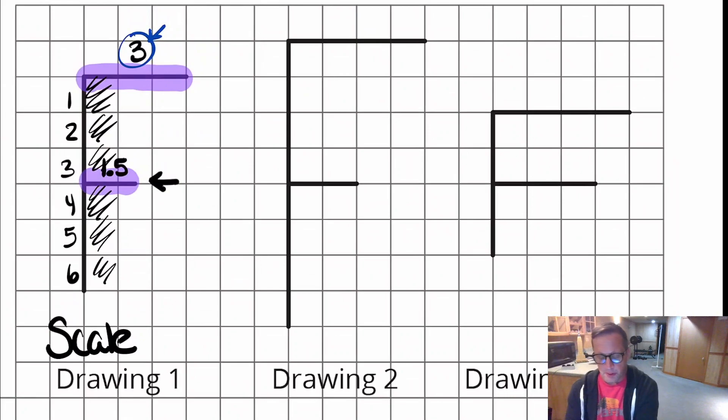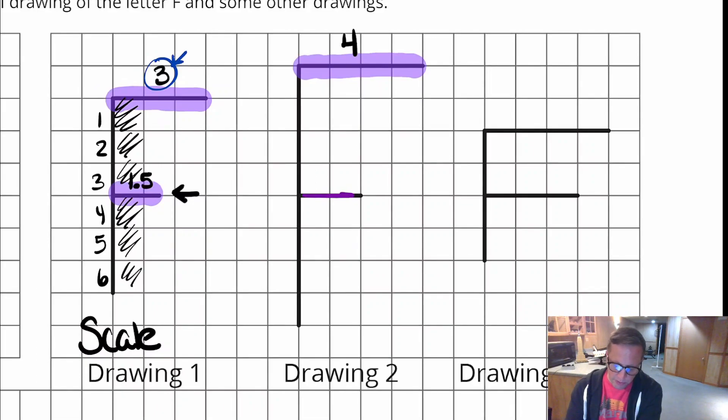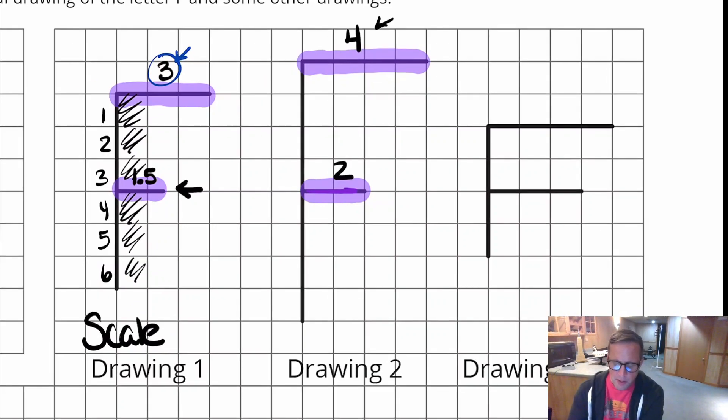Moving on to drawing two. Let's see here. We've got this top part. This top part right here, that's four units. And this middle part is two units. So that's good. So far that looks like it's proportional. But let's check out the things too. Now since the top is four, the side should be eight, right? So it should be eight. So one, two, three, four, five, six, seven, eight.